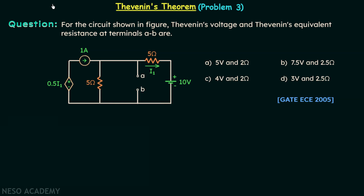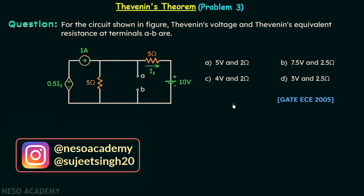In the previous lecture we saw how to calculate Vth and Rth when there is a dependent source present in the network. Now in this presentation we are going to solve a question taken from the GATE ECE 2005 paper. According to this question we need to find Thevenin's voltage Vth and Thevenin's equivalent resistance Rth at terminals A and B.